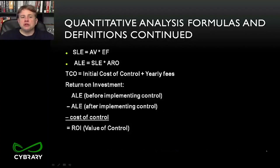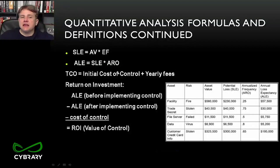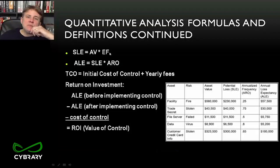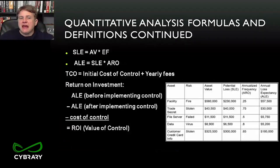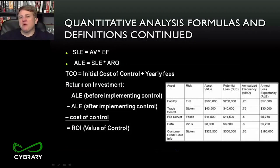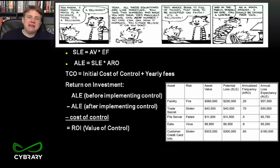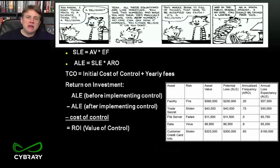To get single loss expectancy, take asset value times exposure factor. These formulas could appear on the test, so take a few minutes to memorize the terms and formulas. But ultimately, if you just think it through — every time this happens it costs me $10,000, and it happens four times a year, so my annual loss is $40,000 — you don't have to get tangled up in memorizing the formula.